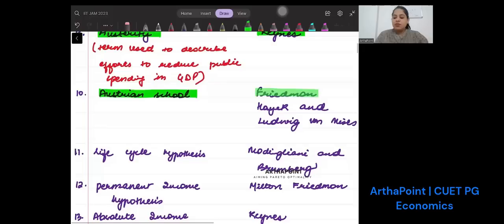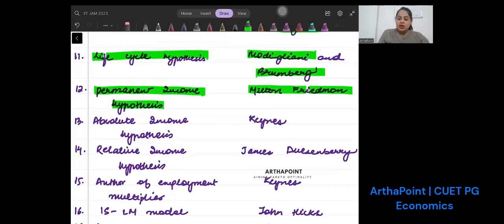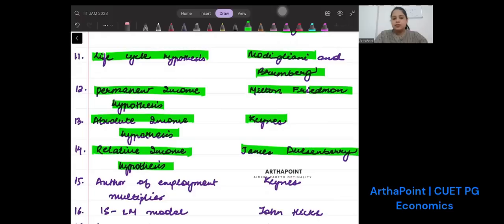Austrian model - the main economists are Friedman, Hayek, and Ludwig. Life cycle hypothesis was given by Modigliani and Brumberg. Permanent income hypothesis was given by Milton Friedman. Absolute income hypothesis was given by Keynes. Relative income hypothesis was given by James Duesenberry.